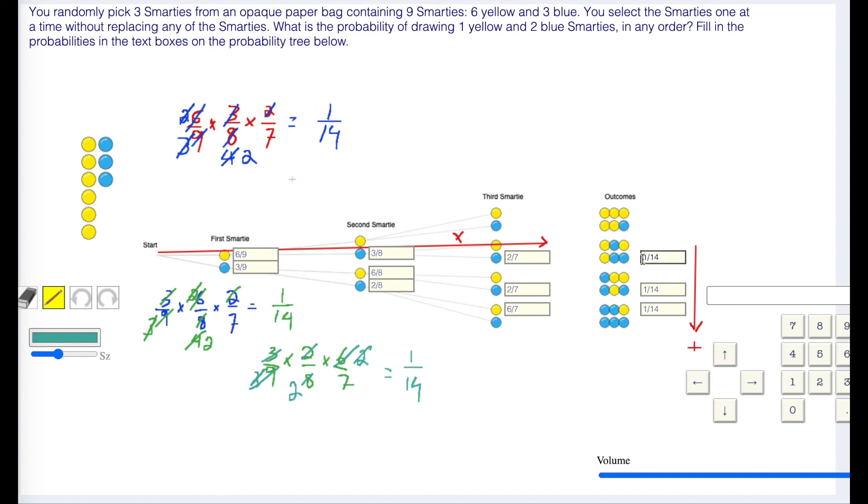Altogether you have 1/14 chance of getting yellow, blue, blue. You have a 1/14, 1 in 14 chance of getting blue, yellow, blue. You have a 1 in 14 chance of getting blue, blue, and yellow. Altogether that's 3 of them. 3/14 of a chance. Our total probability is 3 out of 14.